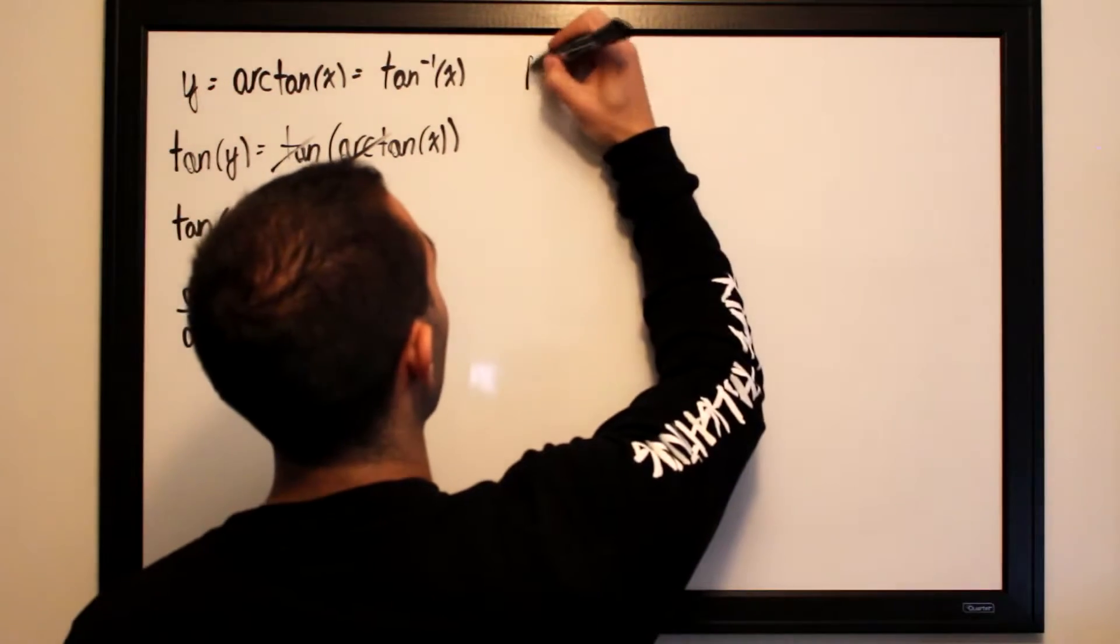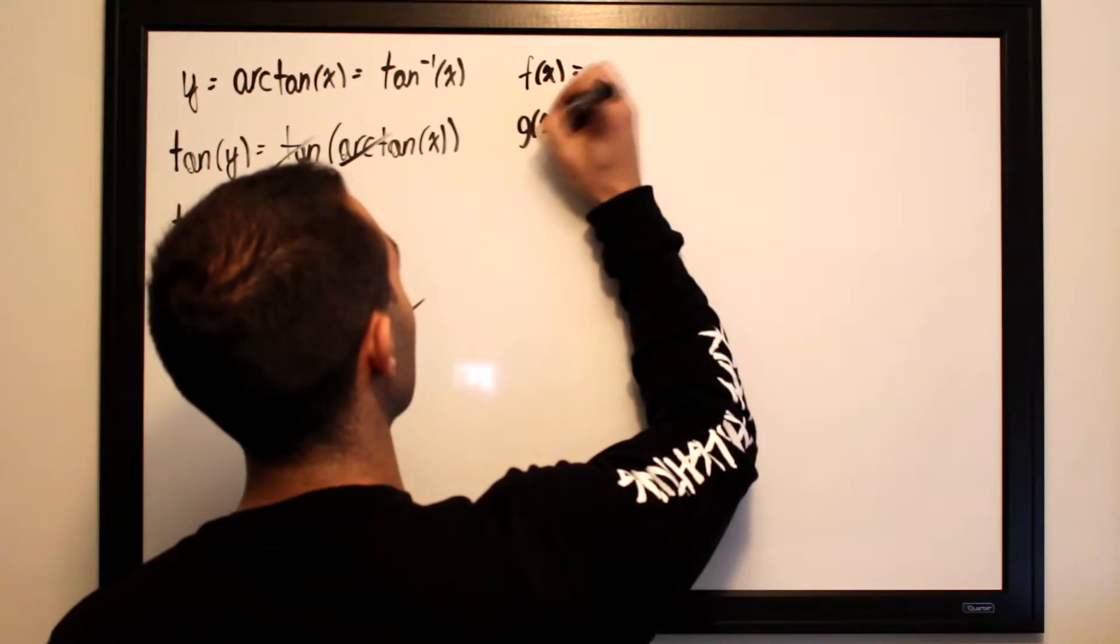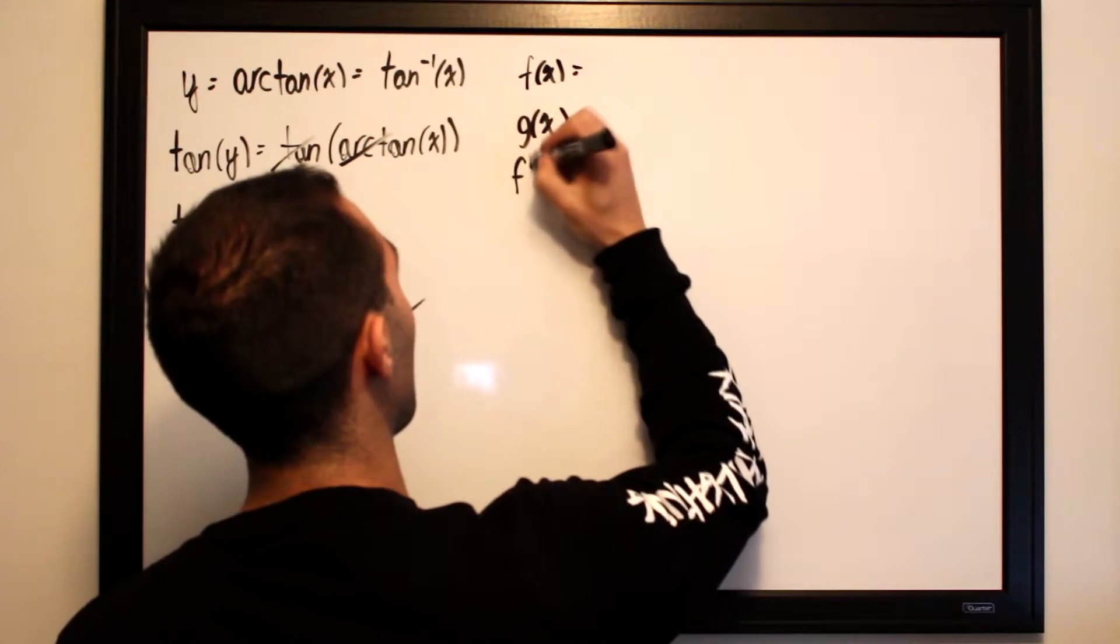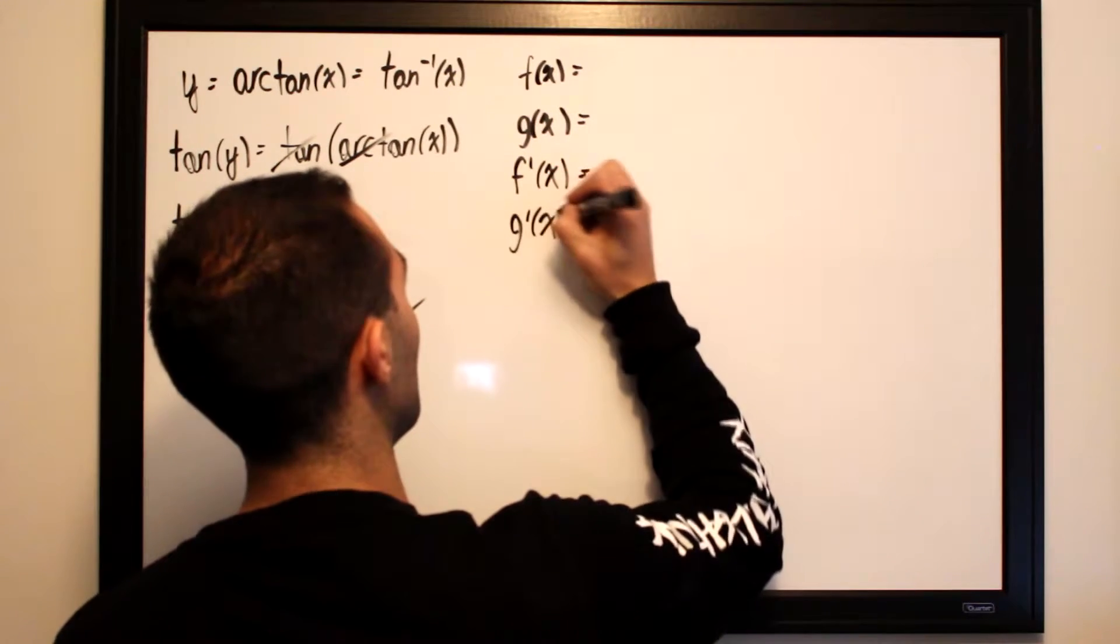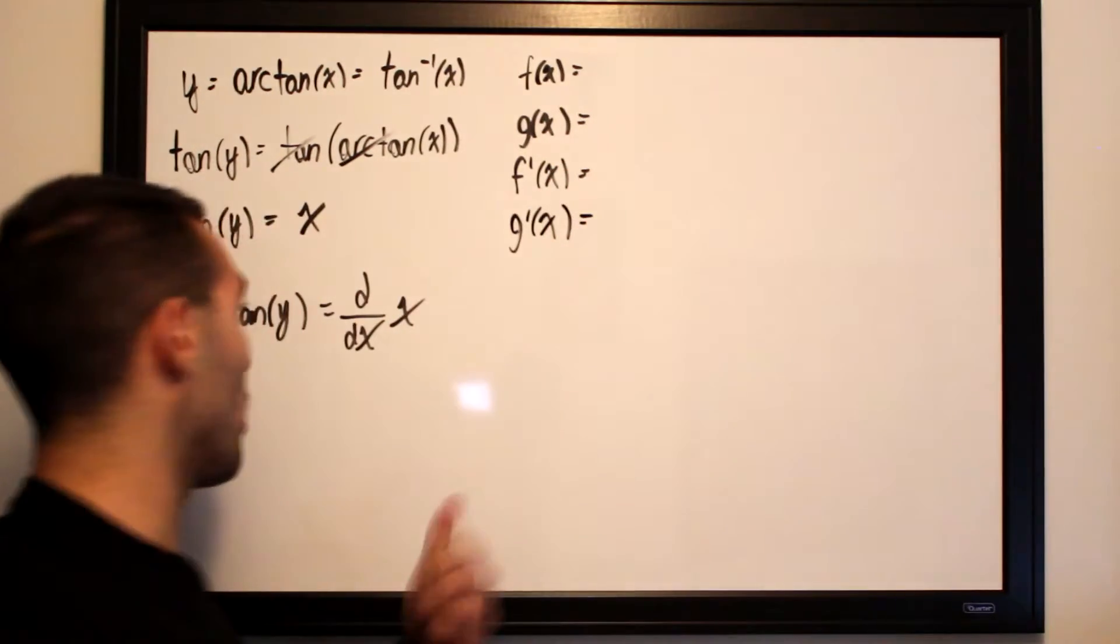So we have our f of x, g of x. Feel free to check out my chain rule application video to familiarize yourself with the chain rule if you aren't already.